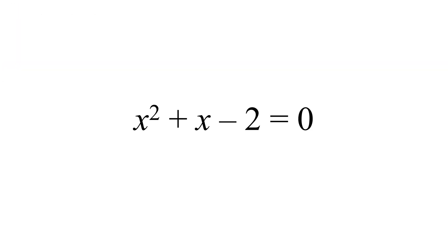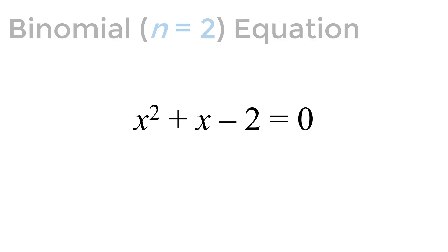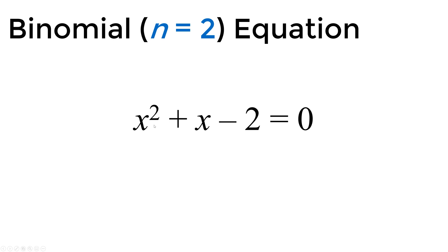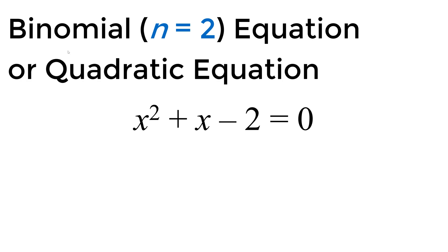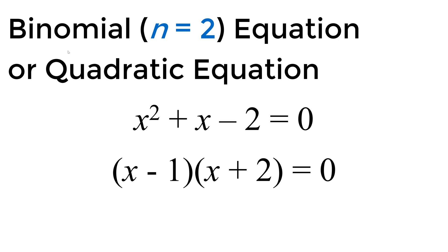Let's solve a quadratic equation. Let's say we have x squared plus x minus 2 equal to zero. In this case, the highest exponent is n equal to 2, so we call it a binomial or quadratic equation. When you factor it out using pen and paper, you break it down into (x minus 1)(x plus 2) equal to zero. So x equals 1 or x equals minus 2.